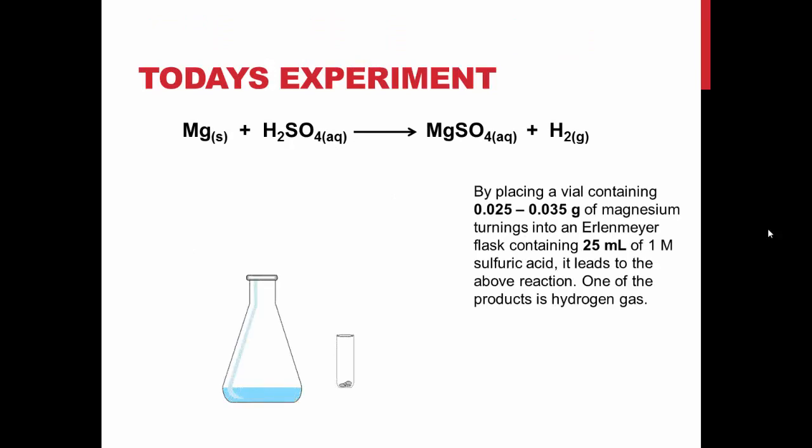In this experiment, you will use the reaction of solid magnesium with sulfuric acid to form a known amount of hydrogen gas. Once measured, this amount will be used to find the moles of gas produced and an experimental value for the ideal gas constant, R. This will be accomplished using the setup shown on the next slide.